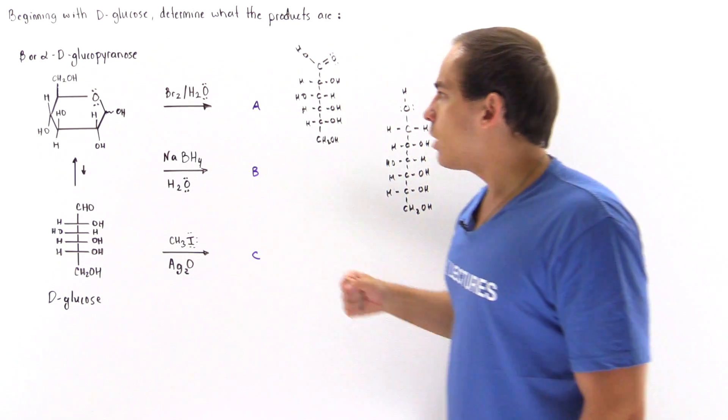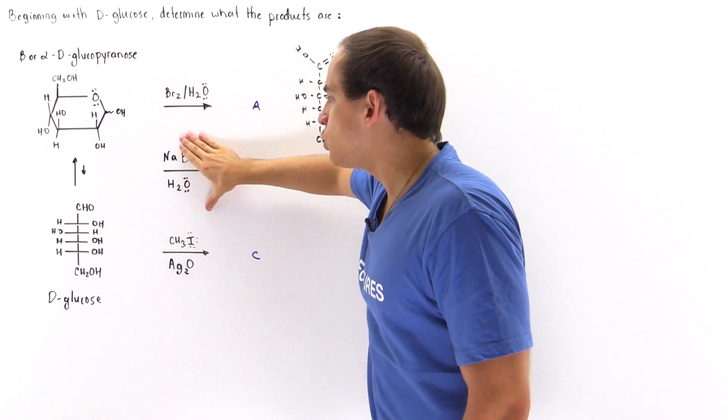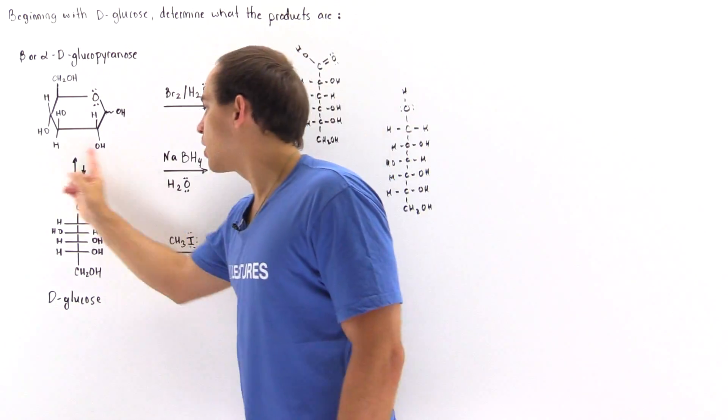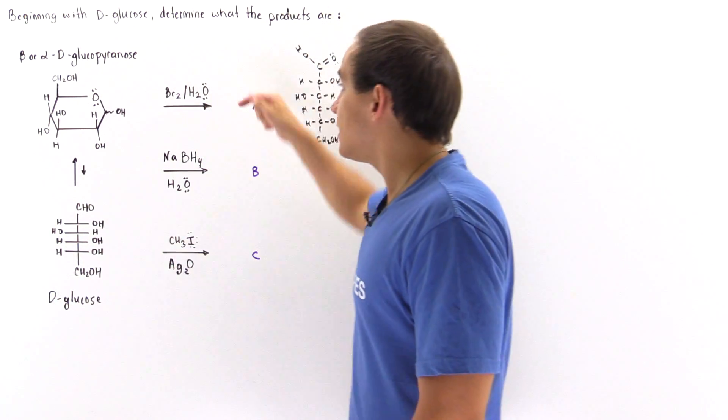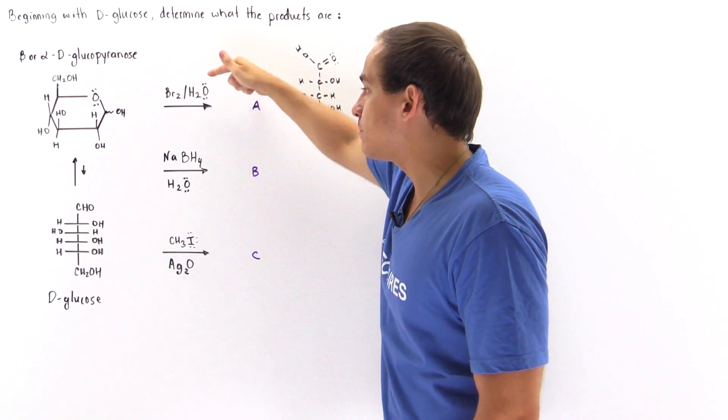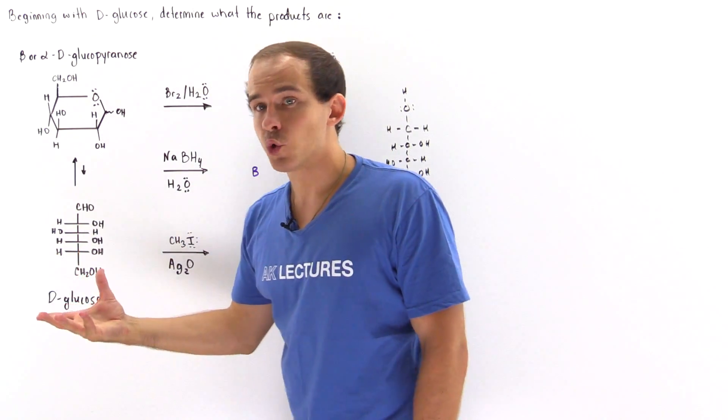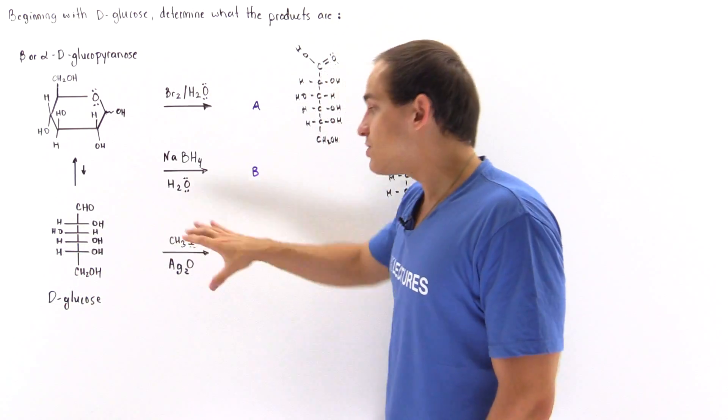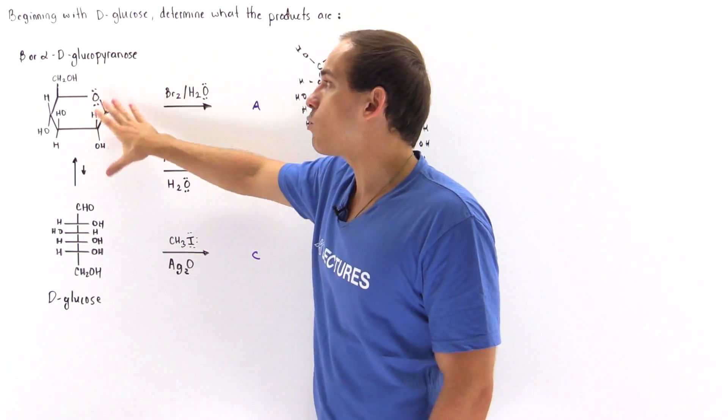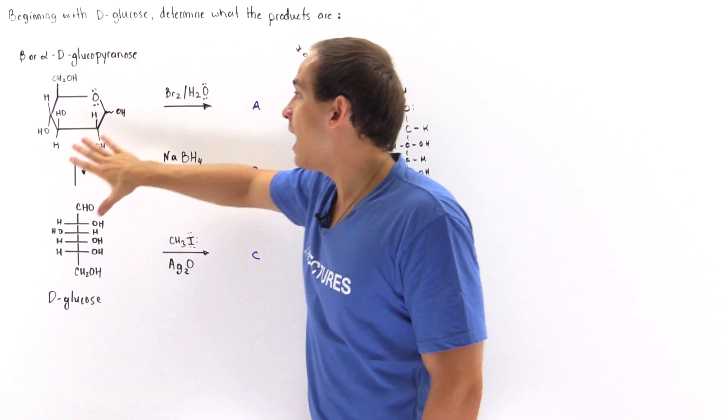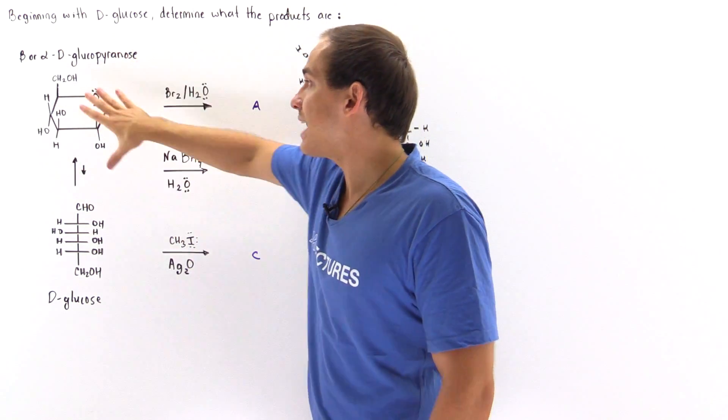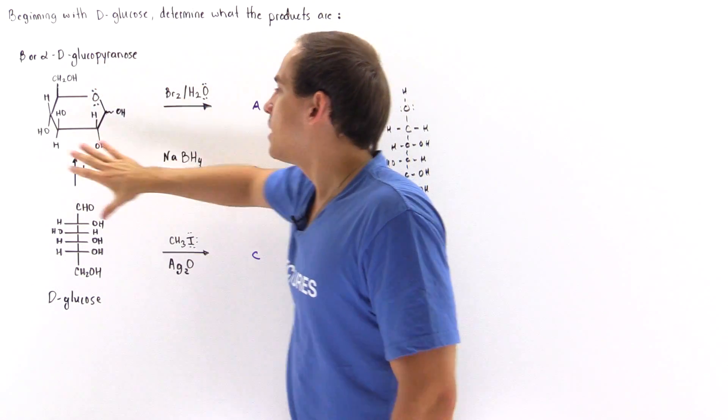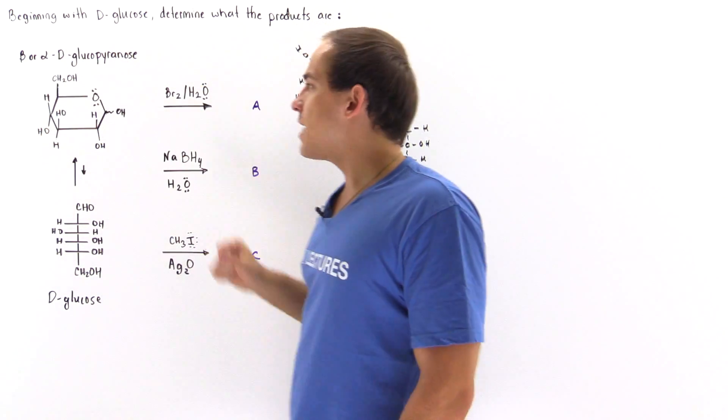In reactions 1 and 2 we have to react with the open case because these reactions only take place with the aldehyde group. But this doesn't need the aldehyde group, and so this will react with our alcohol groups. It will react on the alcohol groups on the cyclic case because it's the cyclic case that will predominate at equilibrium.